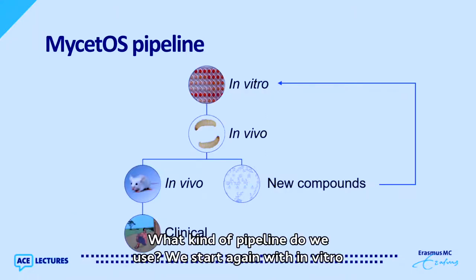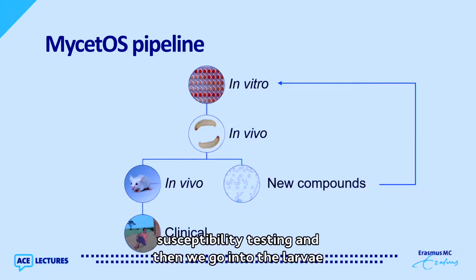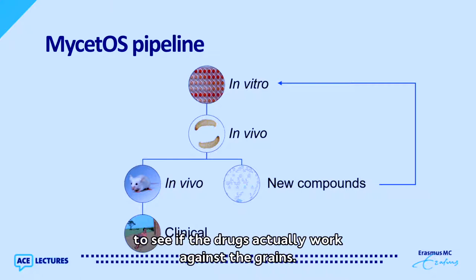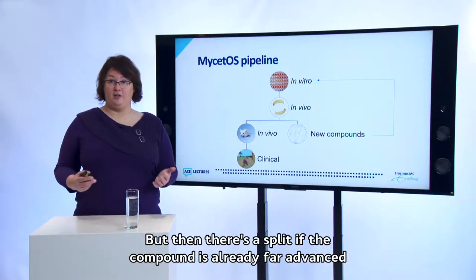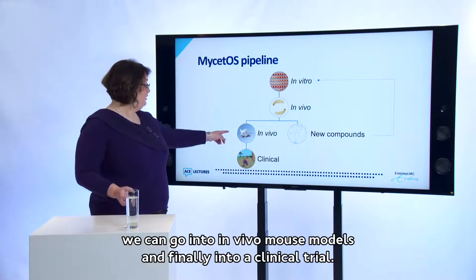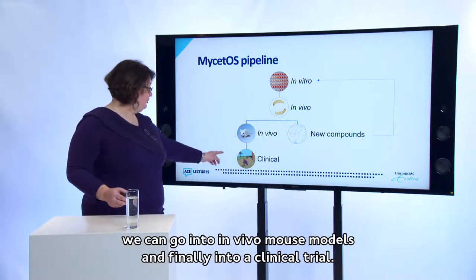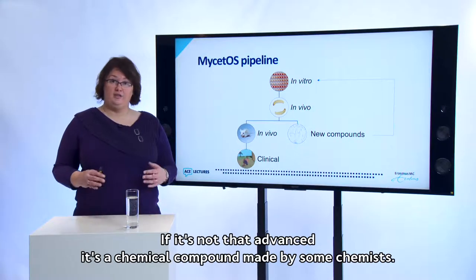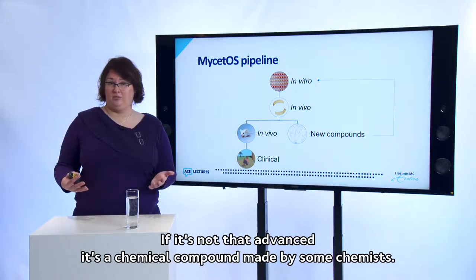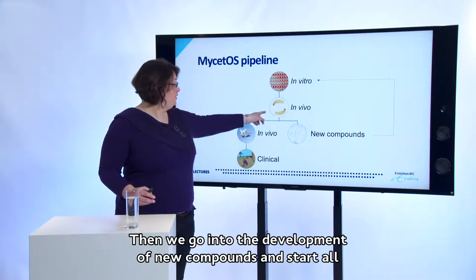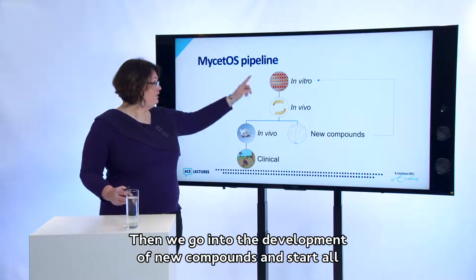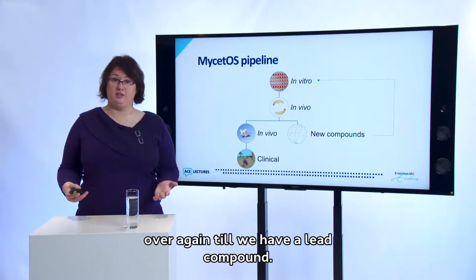In the Mycetos pipeline, we start with in vitro susceptibility testing, then go into the larvae model to see if drugs work against the grains. If a compound is already far advanced, we proceed to in vivo mouse models and then a clinical trial. If it's a new chemical compound made by chemists, we go into new compound development and start over until we have a lead compound.